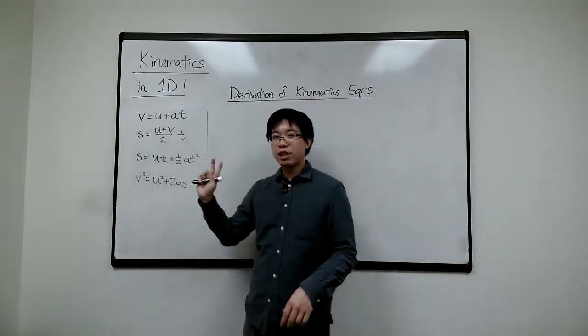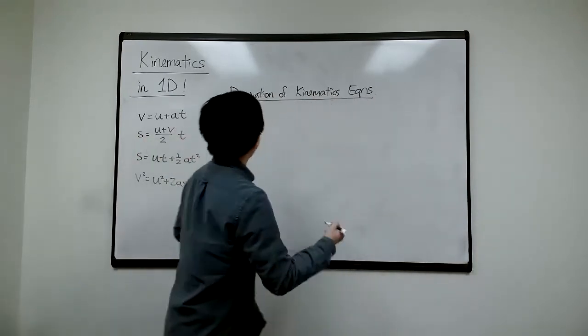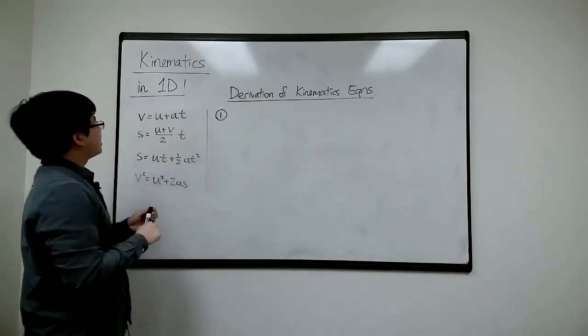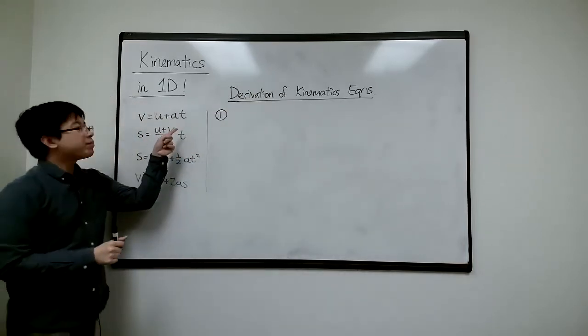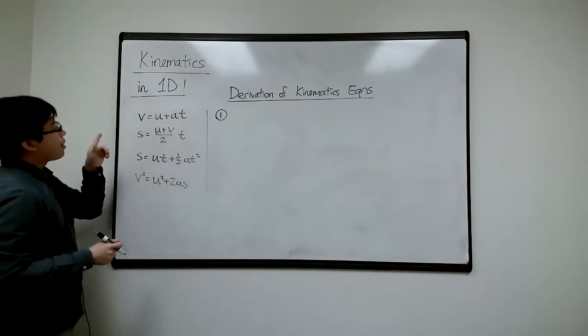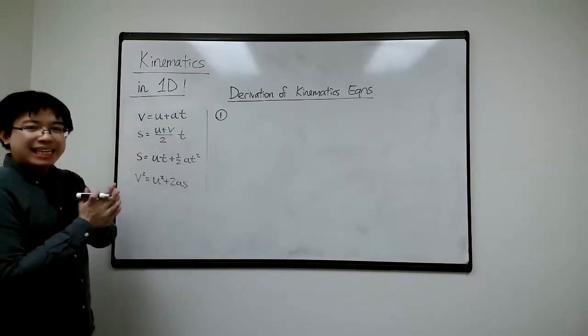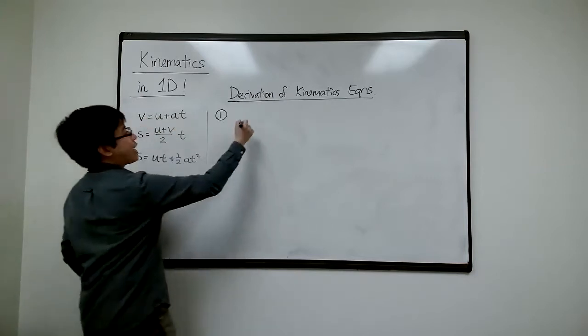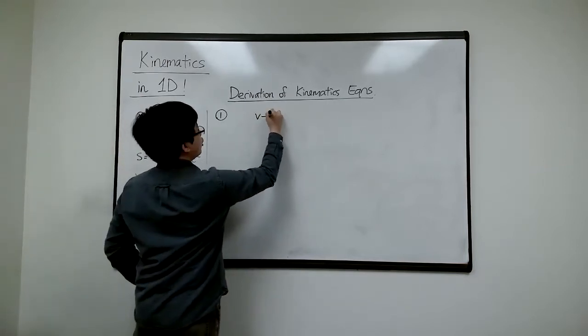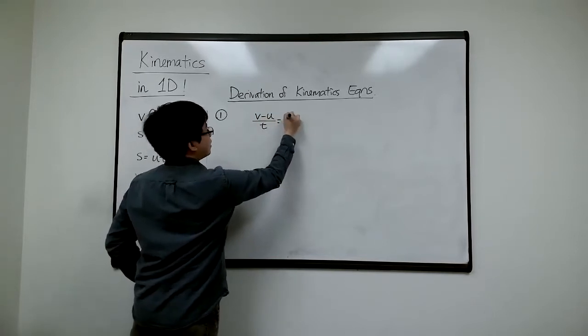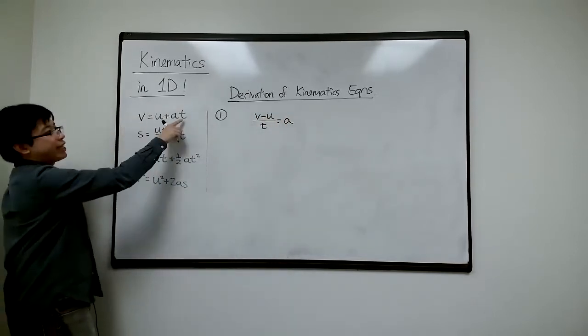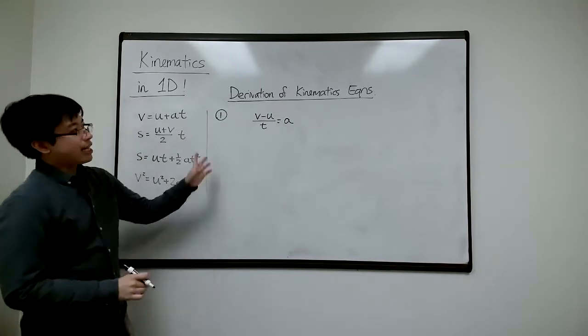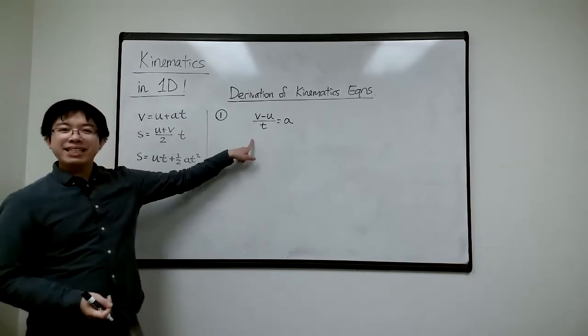The first two is especially simple so I'll start with the first one. The first one says V equals U plus AT. So have that memorized, but if you think about it, I can rearrange that. So where does that come from? Where does this V equals U plus AT come from? If I rearrange that to V minus U divided by T, so if I subtract the U over here and divide by the T, you can check, does that look familiar to you?